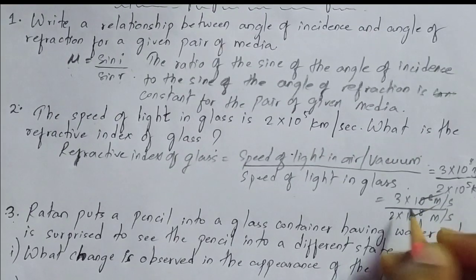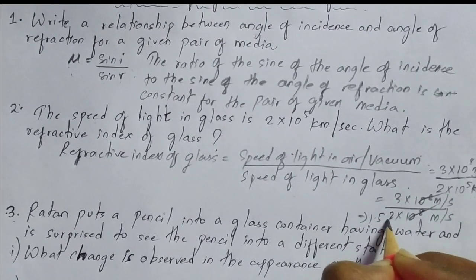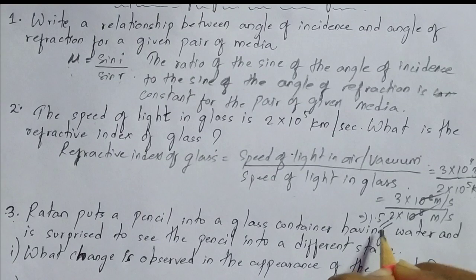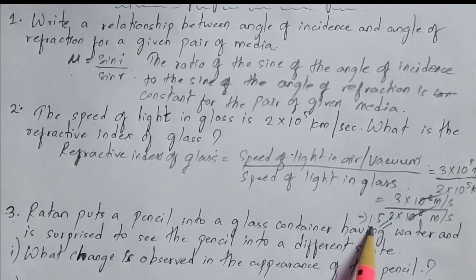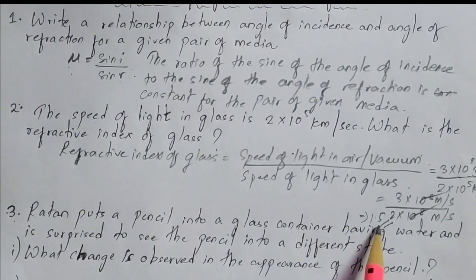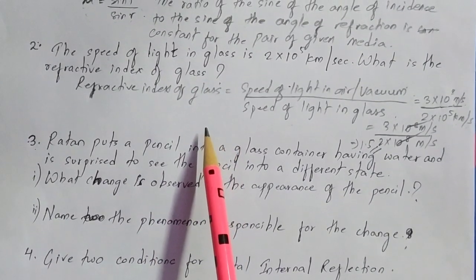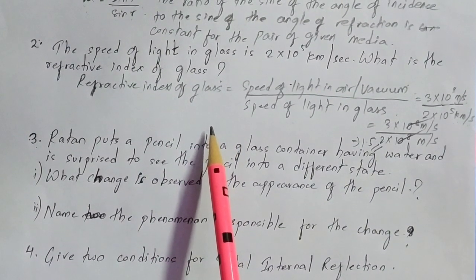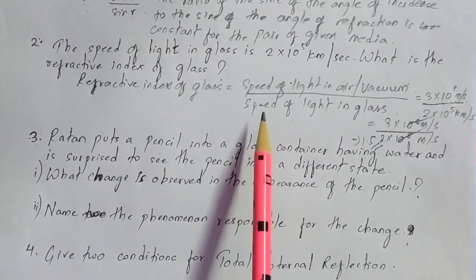The 10⁸ terms cancel out, and 3 divided by 2 gives 1.5. So the refractive index of glass is 1.5. Since refractive index has no unit, the answer is simply 1.5. Go through these types of numerical questions, as they are commonly asked from the chapter on refraction.